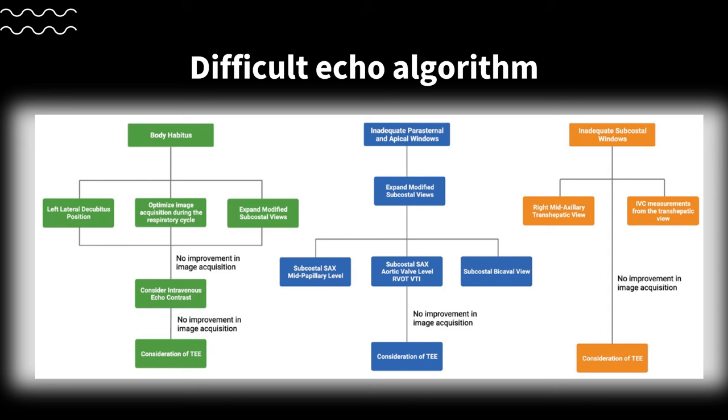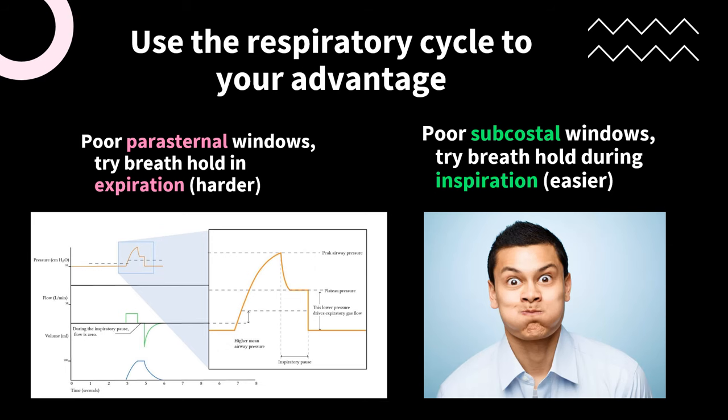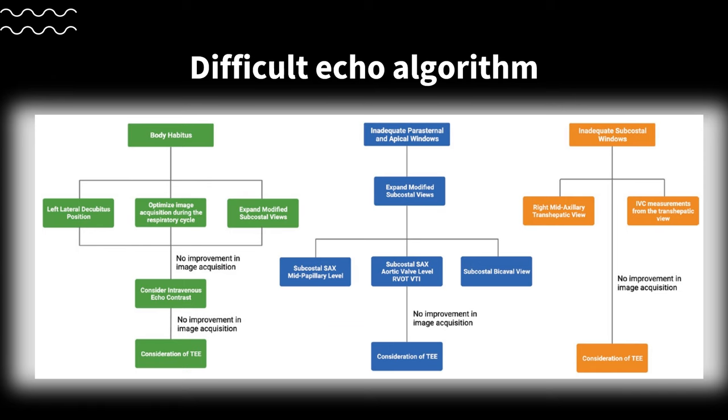After rolling the patient into the left lateral decubitus or glamour position, we're going to optimize image acquisition during the respiratory cycle. This is easier when the patient is mechanically ventilated, but you can do it when the patient is cooperative as well. For poor parasternal windows, have the patient hold their breath in expiration or use the expiratory hold button on the ventilator. If the patient has poor subcostal windows, have the patient hold their breath on inspiration or use the inspiratory hold button. If both maneuvers don't work, move on to the modified subcostal views.